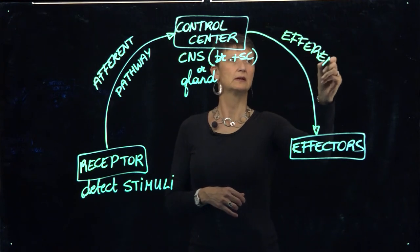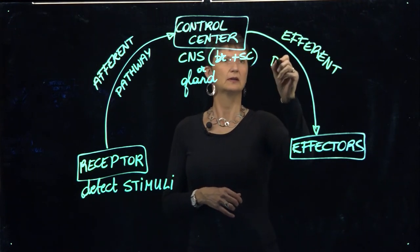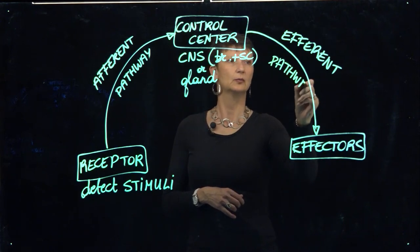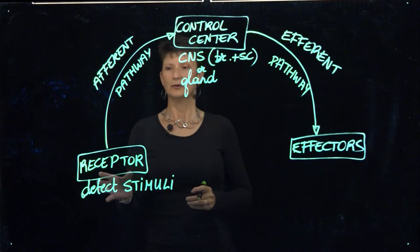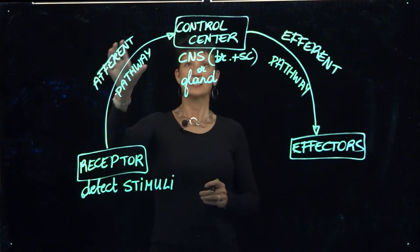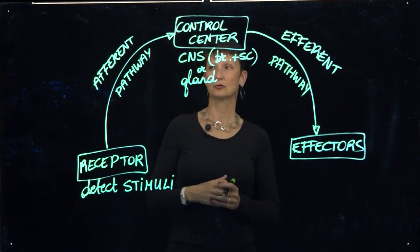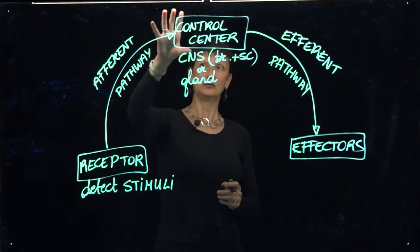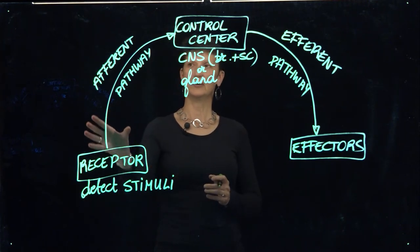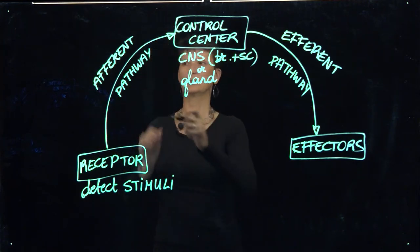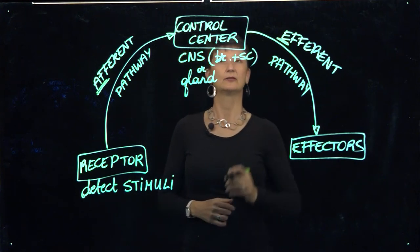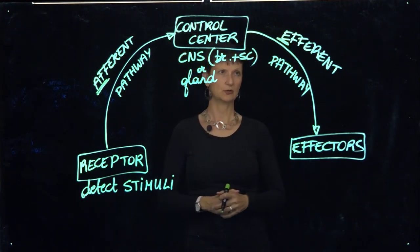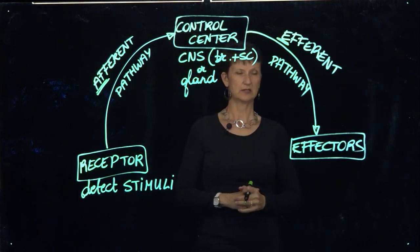Notice that we spell efferent with the letter E because we're exiting the control center. The receptors send signals to the control center via the afferent pathway — think of adding information — which is why we spell this with an A. Exiting information from the control center uses the efferent pathway.